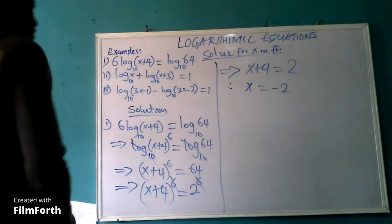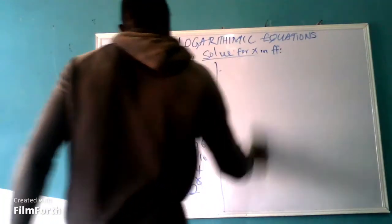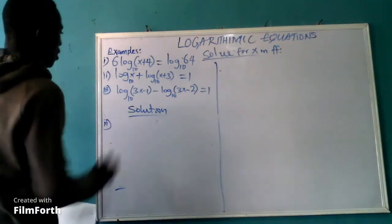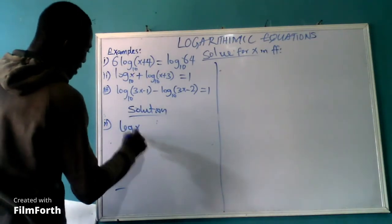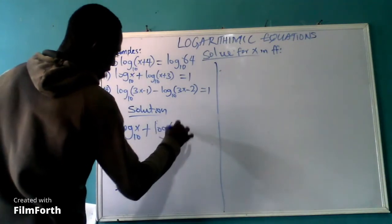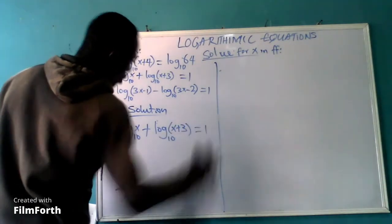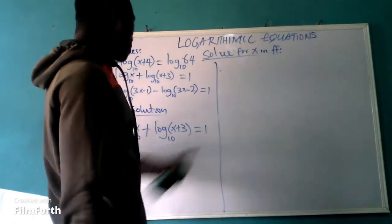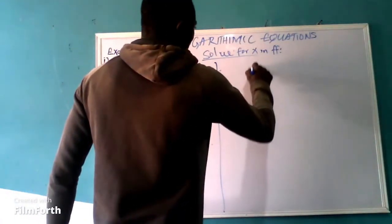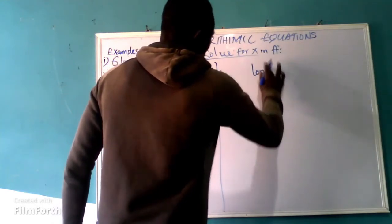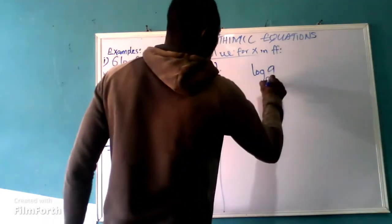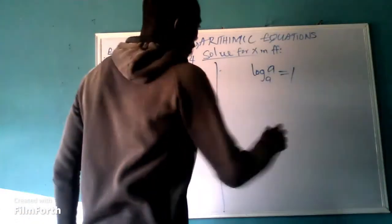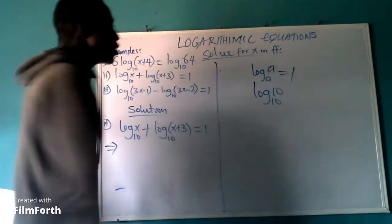And that is all about example 1. Let's see example 2. Example 2 is stated as log(x) base 10 plus log(x + 3) base 10 equal to 1. We want to express the right-hand side as a log of a number into base 10. Since log of a value to the base of the same value equals 1, we can write log(10) into base 10, which equals 1.